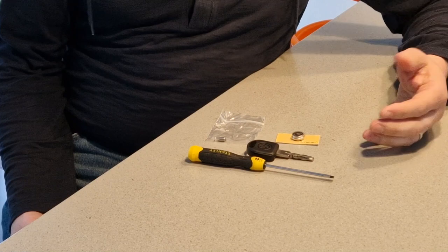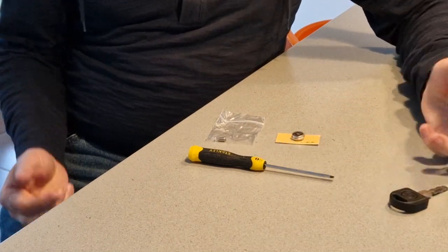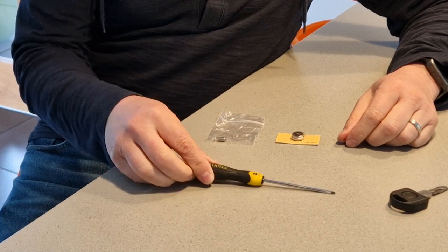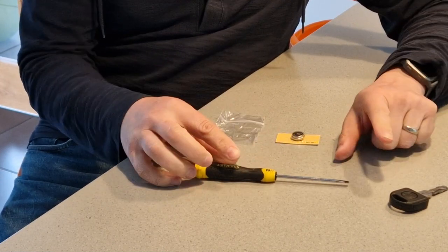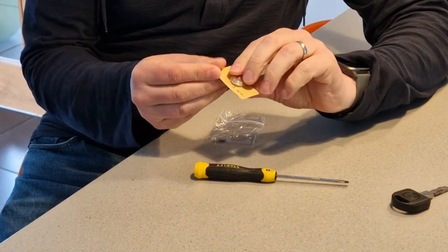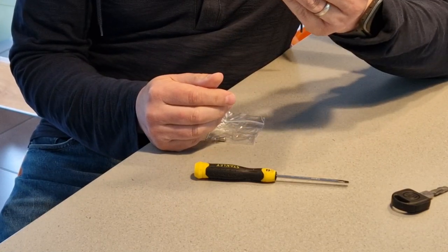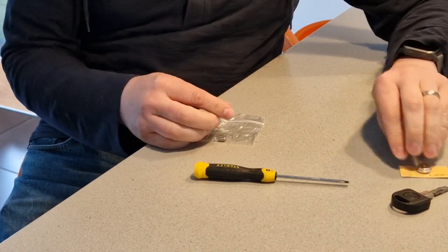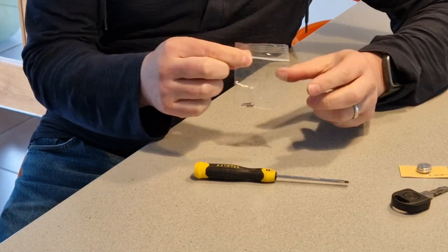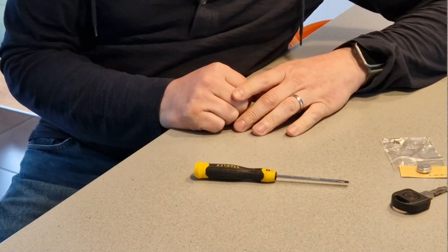As well as the key itself, here are the three tools that you'll need to do this job. Firstly, a small flat bladed screwdriver in order to prise out the battery from the key. A replacement battery, which is an L1560, shown here. I'll put a link in the description for where I bought mine. And also a replacement bulb. Again, link in the description below. Let me show you how to get it all apart and get it working.